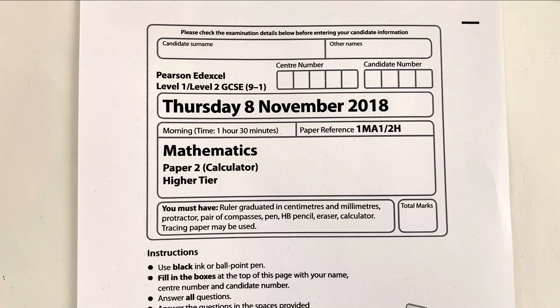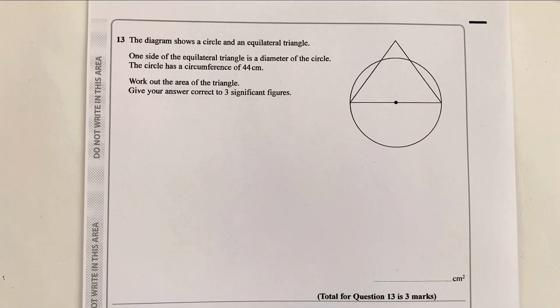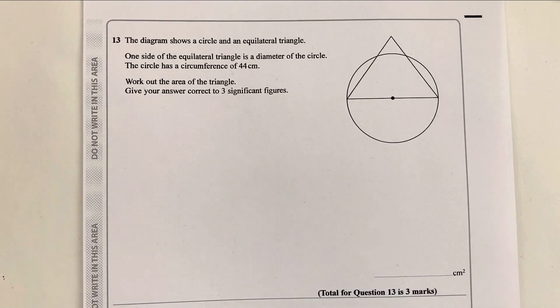This is video three in the playlist where we're looking at the November 2018 Higher Tier Paper 2 for Edexcel. As before, please do stop the video, have a go at each of the questions, compare your solutions. In the previous video we completed through to question number 12, so we're going to start with question number 13. Question number 13, a little bit tricky actually. It takes a little while to work through.